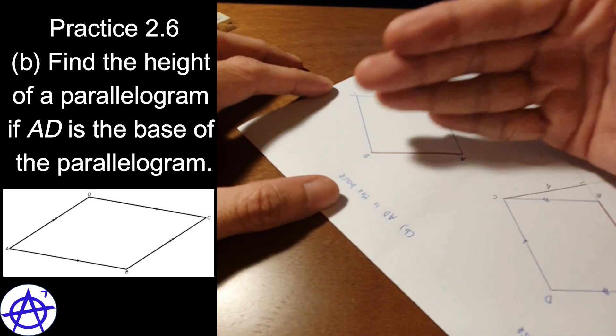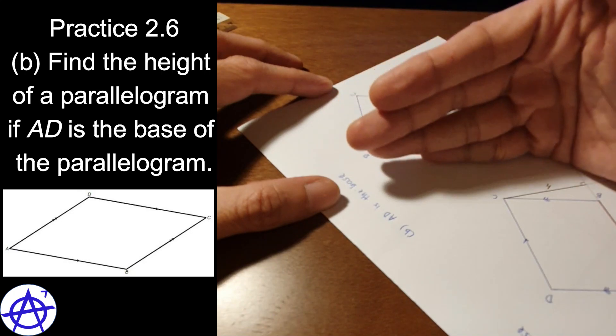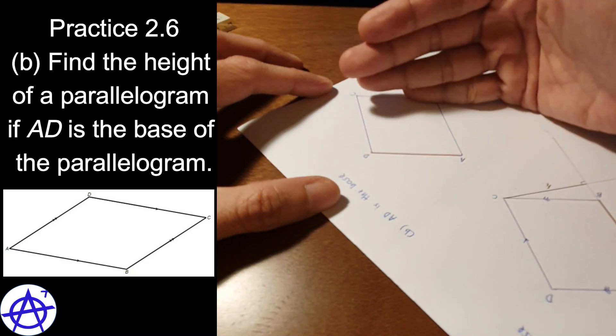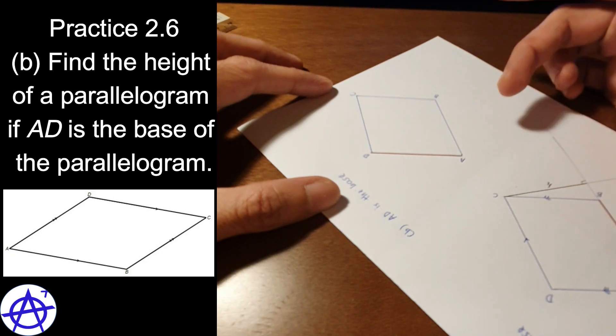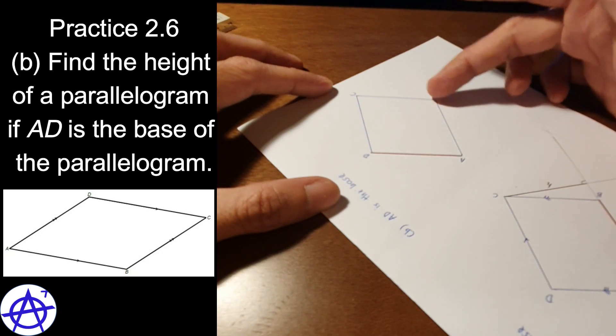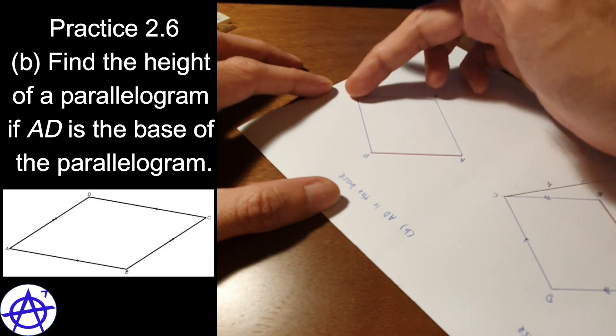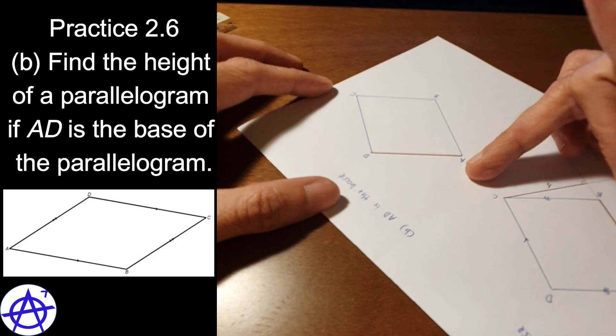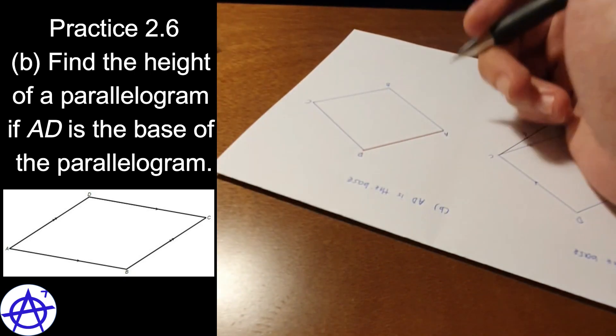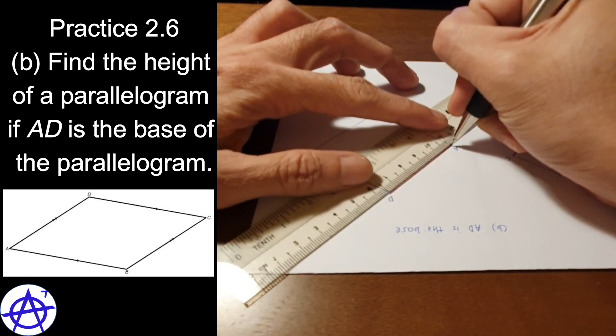Now height means how tall the parallelogram is. So what I'm going to do is, I need to find the perpendicular distance from one of these points here, B or C or any point along the line, to this AD. So what I'm going to do here is, I just extend the line AD.